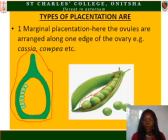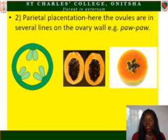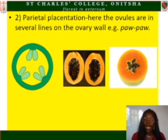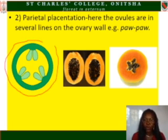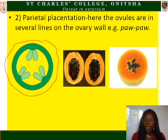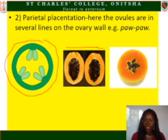The second type is parietal placentation. In parietal placentation, the ovules are arranged in several lines on the ovary wall. An example is purple. In drawing the diagram, draw the one circled on the left-hand side, which shows the longitudinal section of the purple fruit lengthwise.